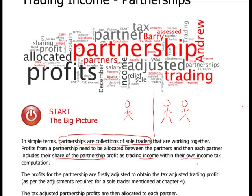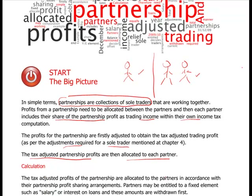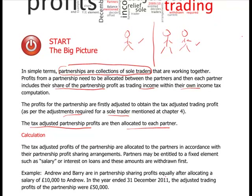Profits are computed in exactly the same way as a sole trader — take your profits per accounts and then adjust them for various things like depreciation, etc. You then take the tax-adjusted partnership profit and allocate it to each partner in accordance with the partnership agreement. One important thing to note: partners are entitled to a fixed element first from the profits. That fixed element could be a salary.